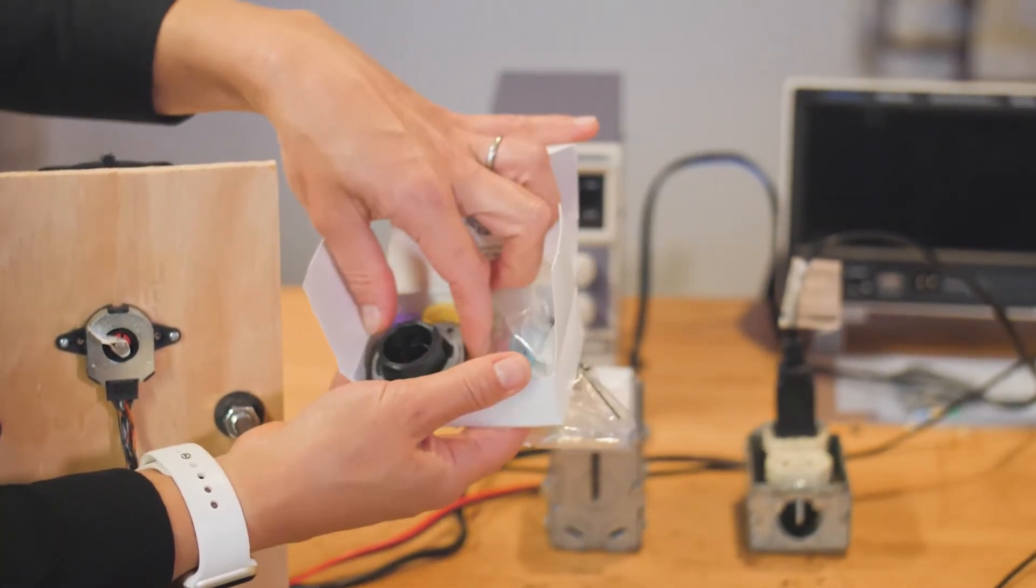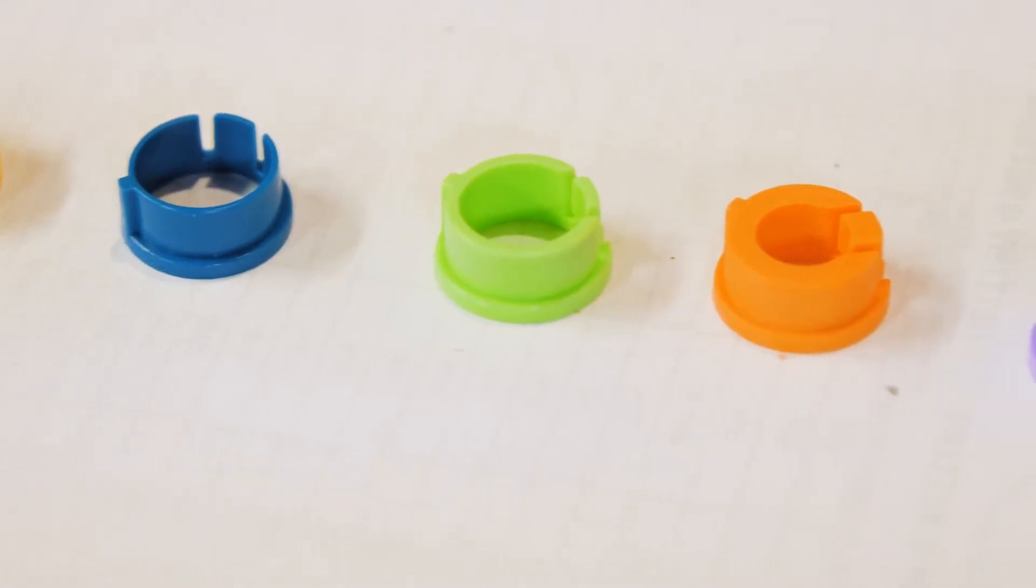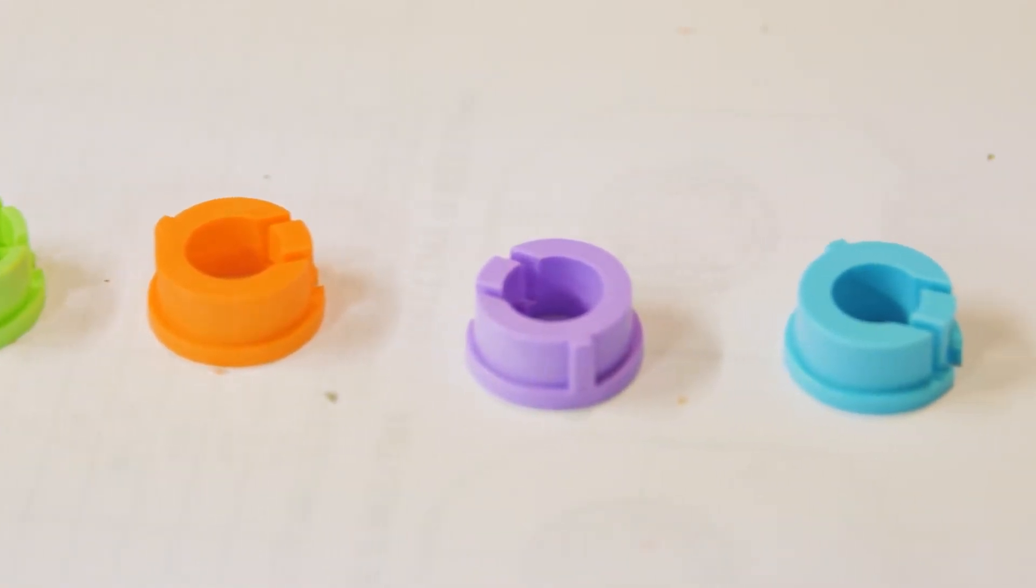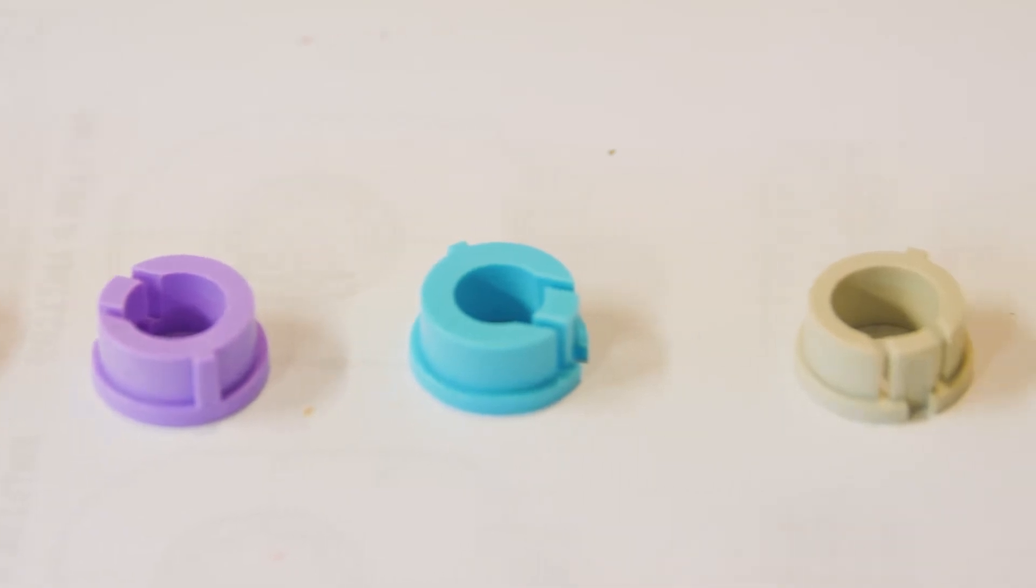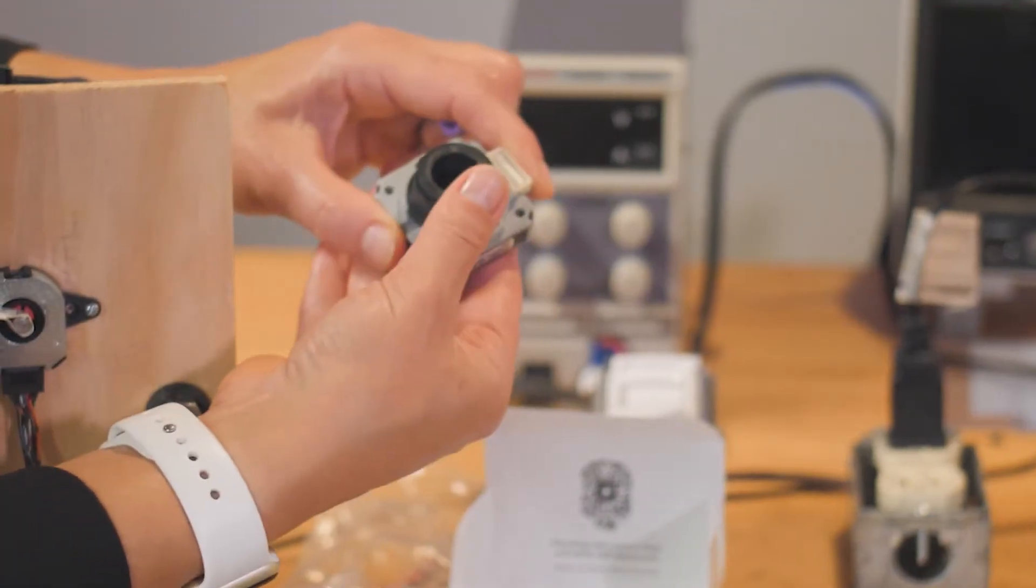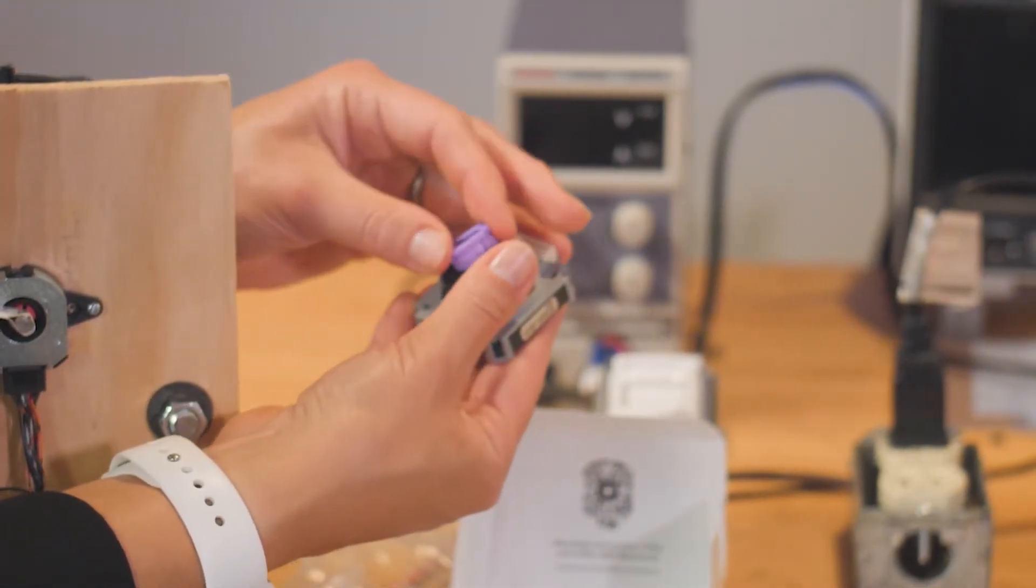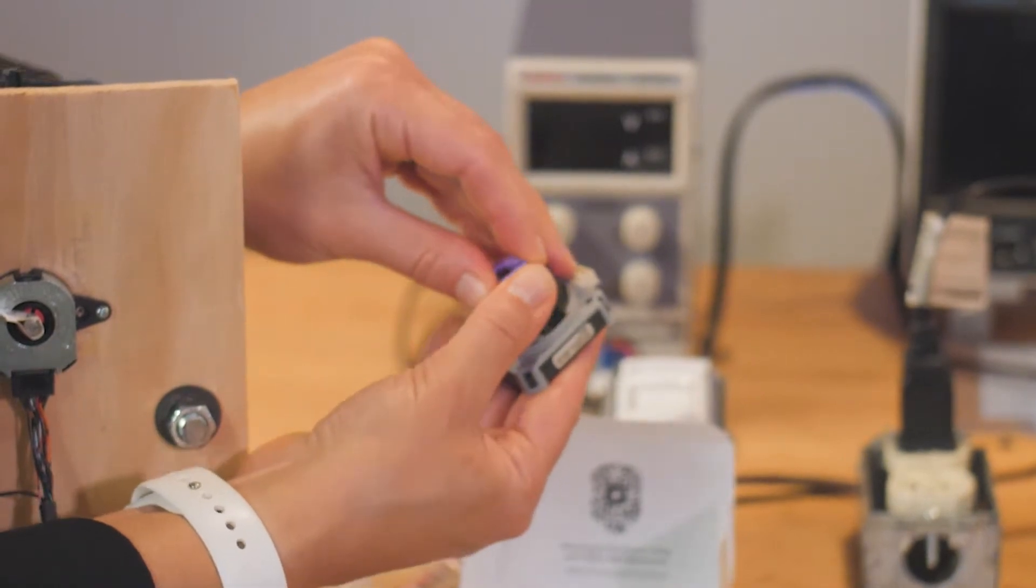The adapters let the encoder work on motor shafts of different diameters. CUI Devices has animated videos online that show how to assemble different encoders on a motor. For the AMT 11 series, you simply use the tools included in the kit.